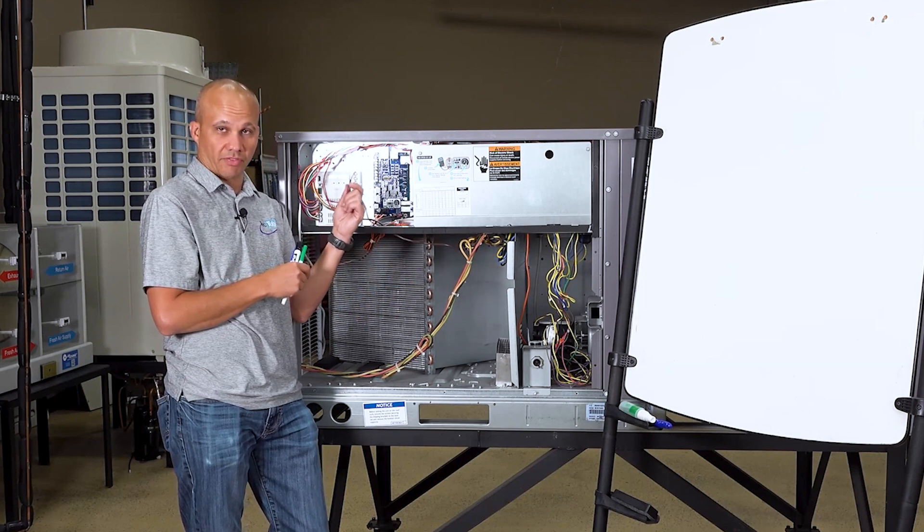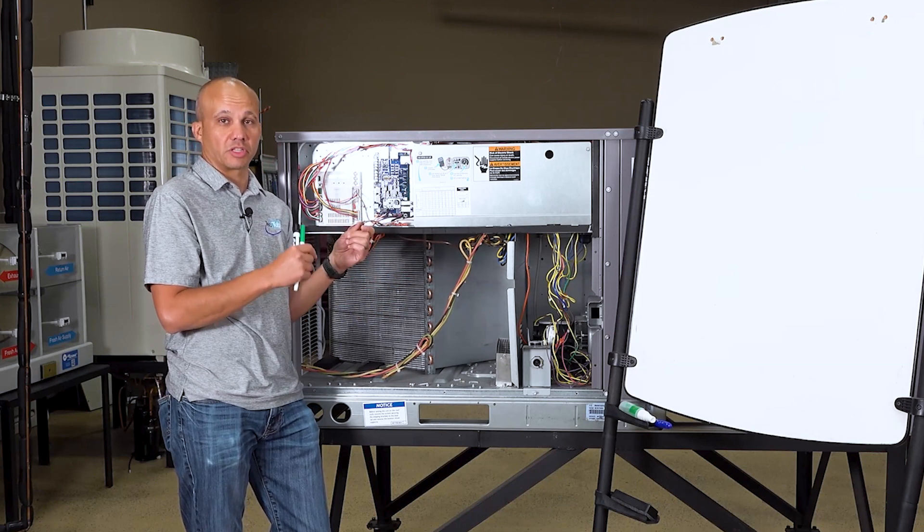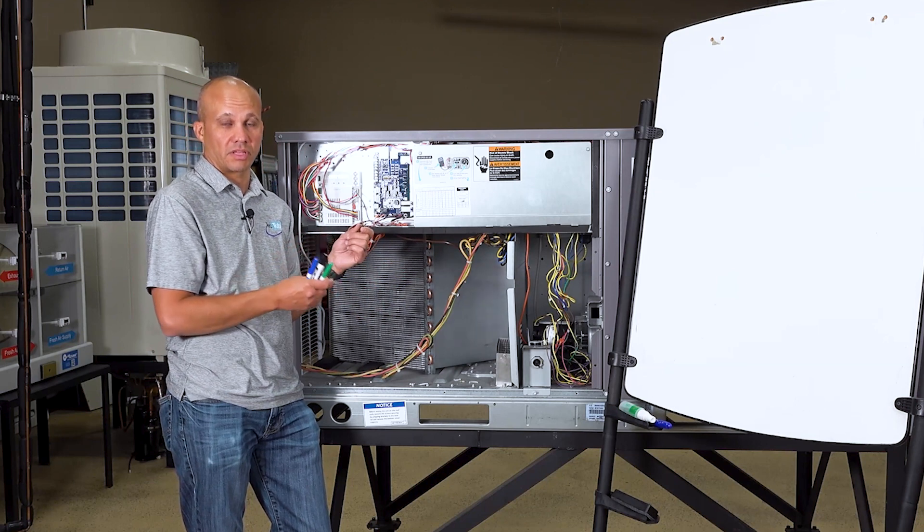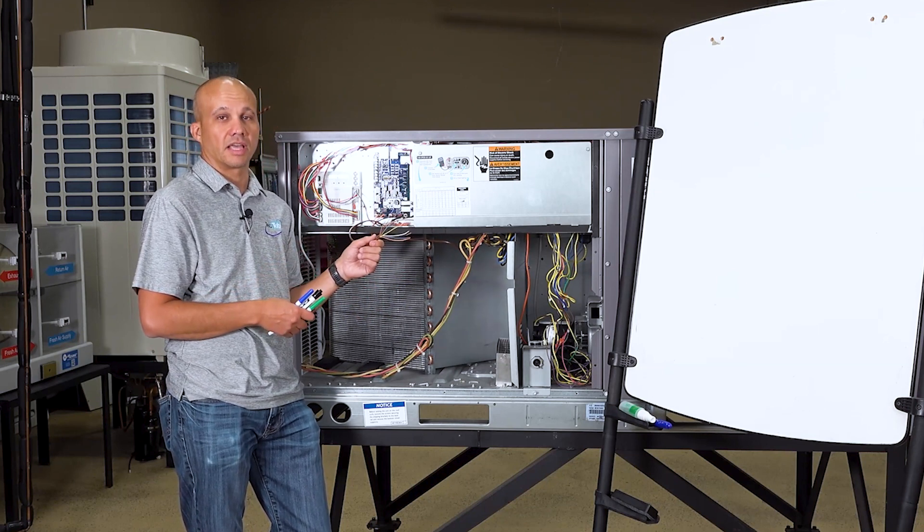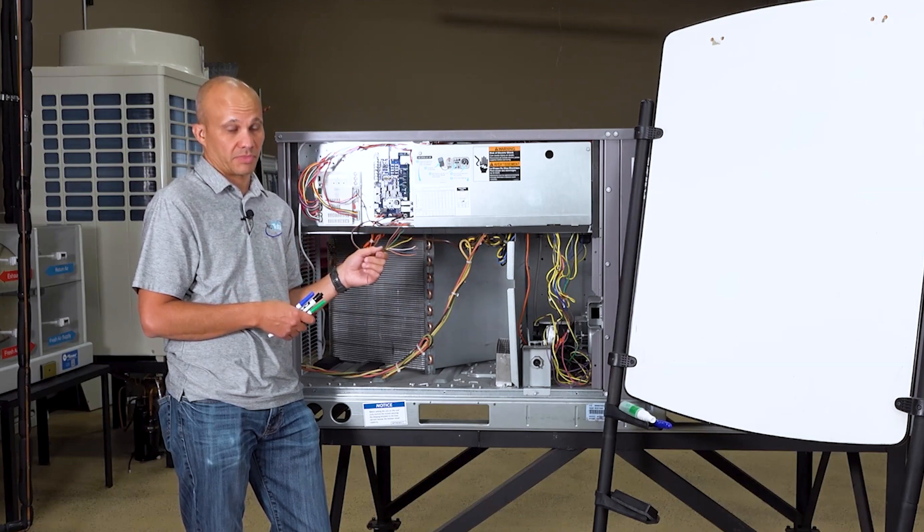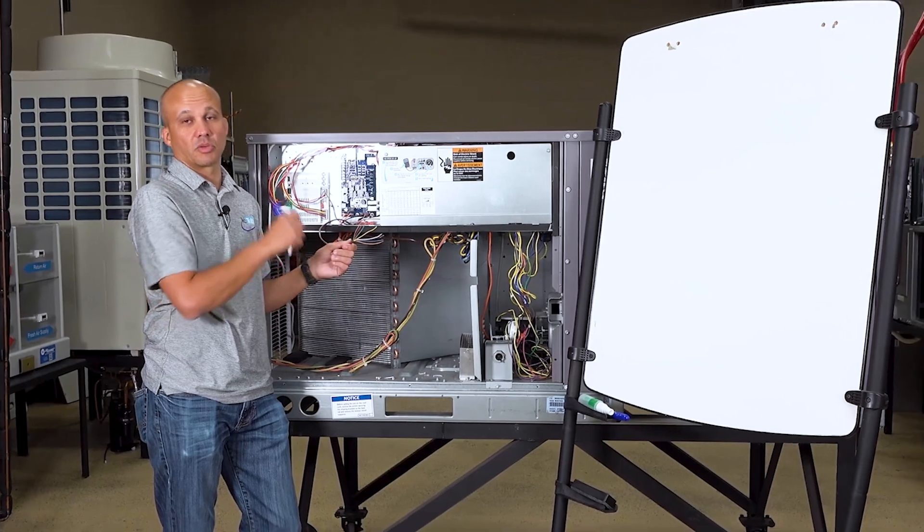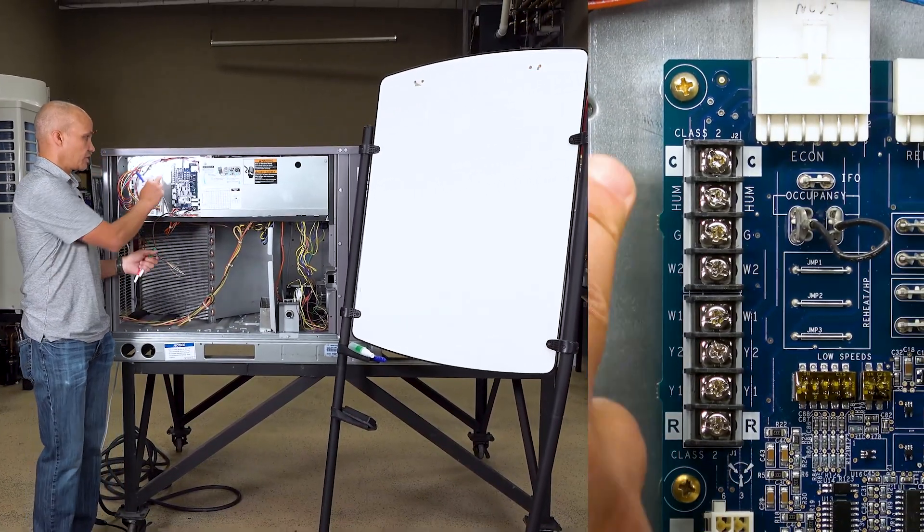Each of these wires coming from our thermostat downstairs has a specific responsibility and job. Generally speaking, they follow a standardized color coding system, although because of the availability of wires that someone has on a project, it may not always be this color system. So you're essentially matching whatever it says here, such as G, to what it says downstairs on the thermostat also labeled G.